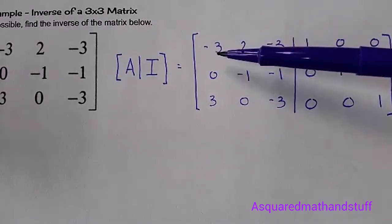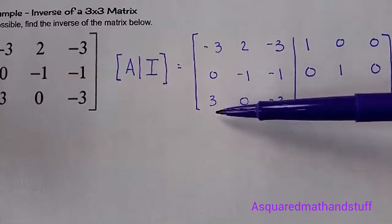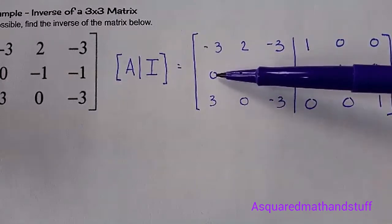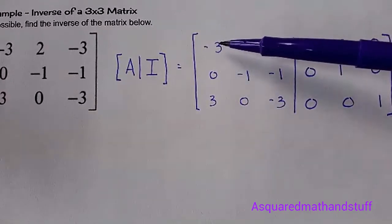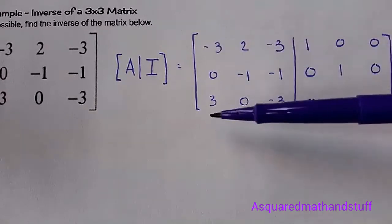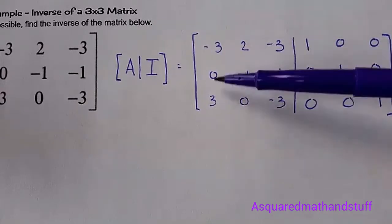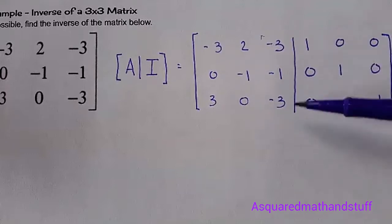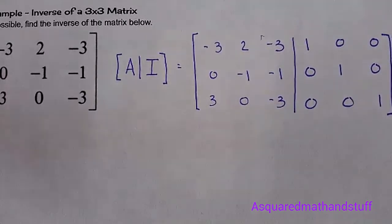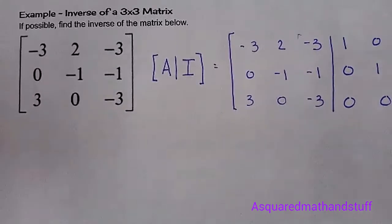The first thing we want to do is get a 0 in the row 3, column 1 position because we already have a 0 in the row 2, column 1. So if we just add row 1 to row 3, we can get that 0 here because negative 3 plus 3 adds to 0. So let's go ahead and add row 1 to row 3. Let me set that up for you.